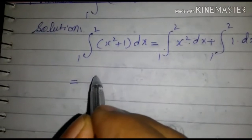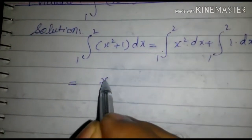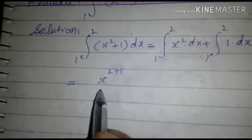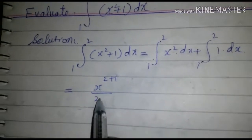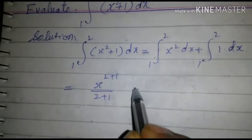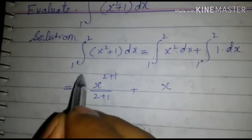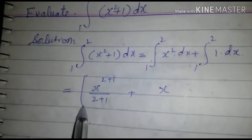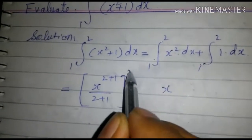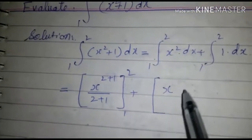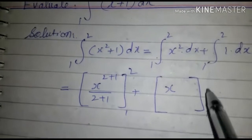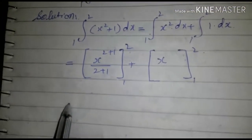So it is equal to x square 2 plus 1 over 2 plus 1 plus x 1 to 2. Its limit is also 1 to 2.